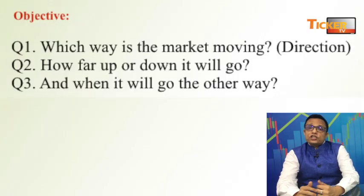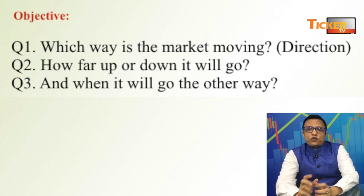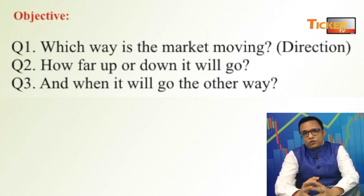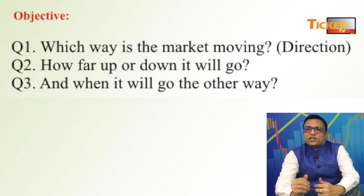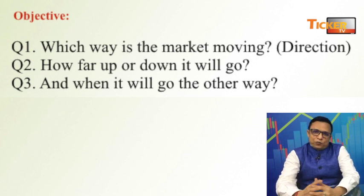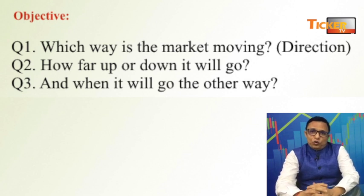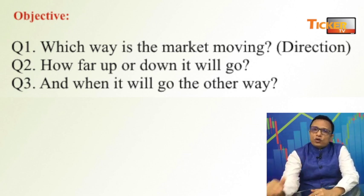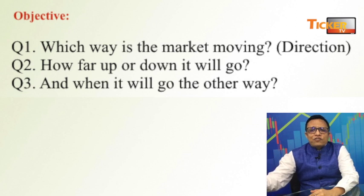Objective. Iske objectives kya hain? Pehla — which way is the market moving? Direction. Market kis disha mein ja raha hai? Market mein ek saying hoti hai: always be with trend. Trend is your friend. Trend ke saath chalo. So there are three types of trend: uptrend, downtrend, or sideways.